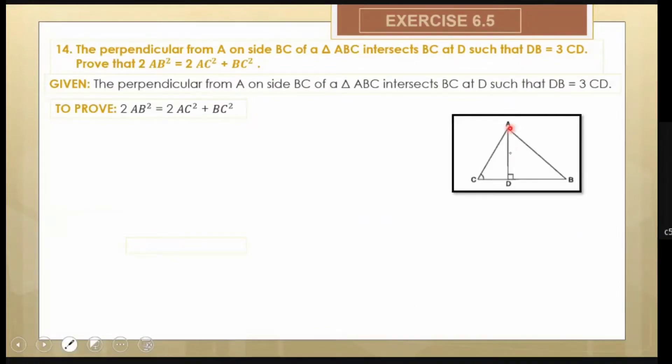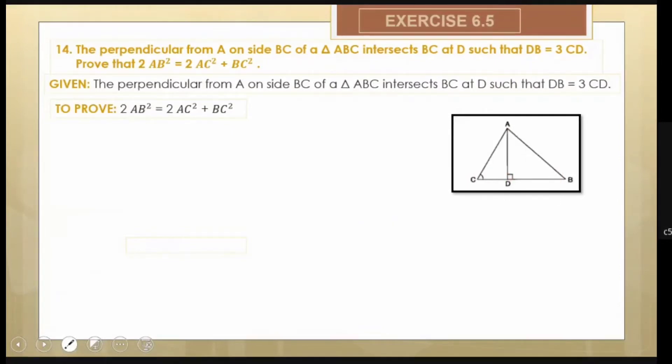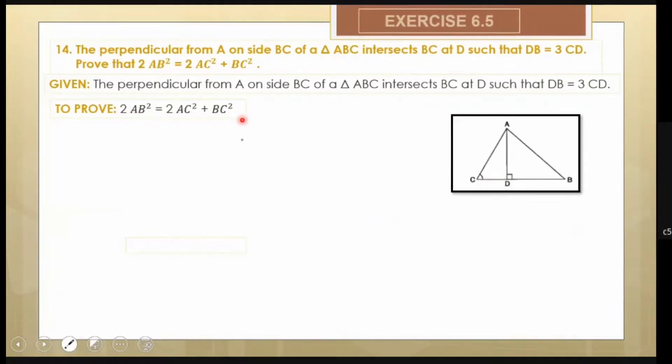Now how do we prove it? Let's see the figure first. So AB is the perpendicular from A to BC. Then DB is given such that it is equal to 3 times CD. I need to prove that 2AB² = 2AC² + BC².